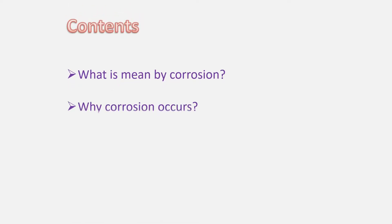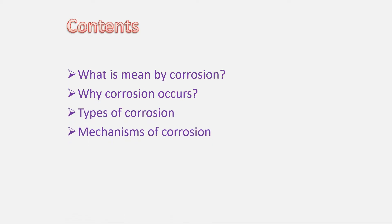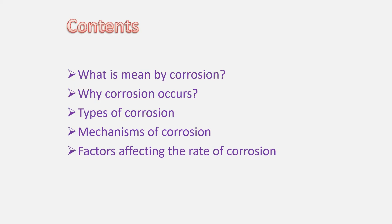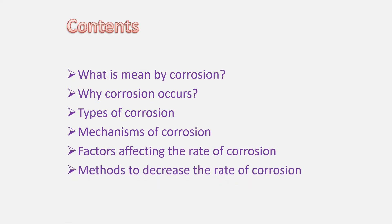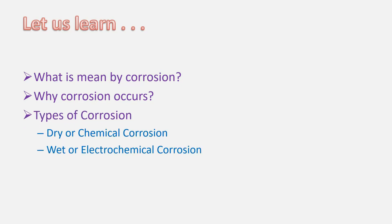In this module we are going to talk about what is meant by corrosion, why corrosion occurs, different types of corrosion, how corrosion occurs in terms of their mechanisms, several factors affecting the rate of corrosion, and different methods to decrease the rate of corrosion. In this particular video we are going to learn what is meant by corrosion, why corrosion occurs, and the types of corrosion.